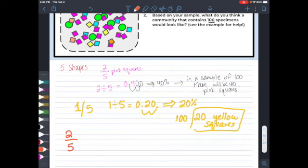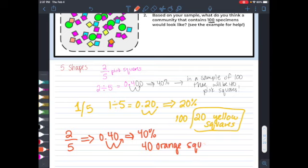We're going to convert this first to a decimal. You are welcome to do that on your calculator. So two fifths is equal to 0.4. We need to convert that to a percentage now. So we move the decimal over twice. That gives us 40%. And since we're dealing with a population of 100, we know that that would be 40 orange squares.